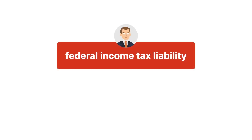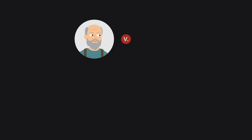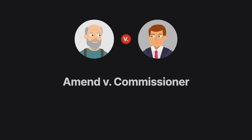A person's federal income tax liability is based on the income the person receives during the relevant tax year. In Amund v. Commissioner, we explore what constitutes receipt for tax purposes.